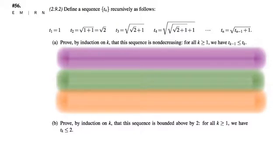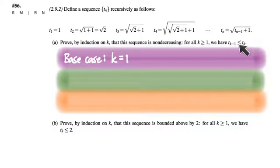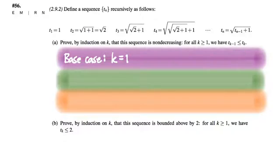In our induction proof we need three things, starting with the base case. Since k is quantified as k ≥ 1, the base case should be k = 1. But when k = 1, we'd need to show t_{k−1} ≤ t_k, and there's no such thing as t_0 in this sequence. So this is actually a typo — it should probably be written as t_k ≤ t_{k+1}, or equivalently, we can change the quantification to k ≥ 2.